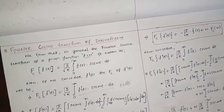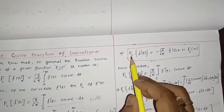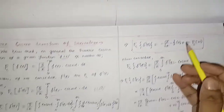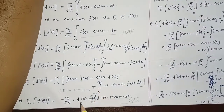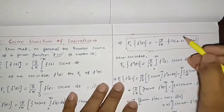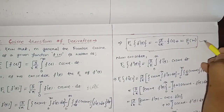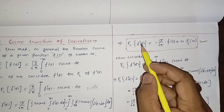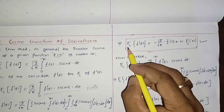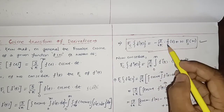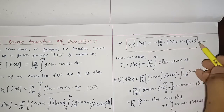So that implies the Fourier Cosine Transform of f'(t), the first order derivative, equals −√(2/π)·f(0) + ω·FS(ω). This is our first expression. Remember this result, as it will be essential when we discuss the application part of Fourier cosine and sine transform.